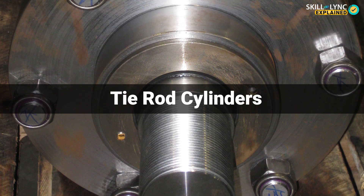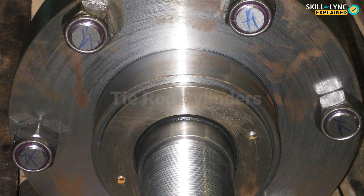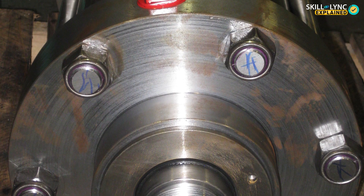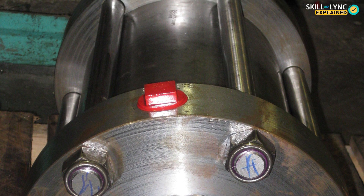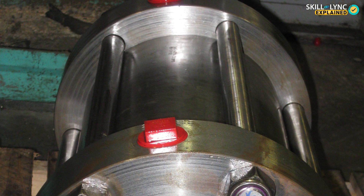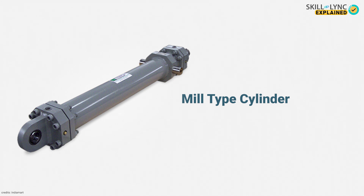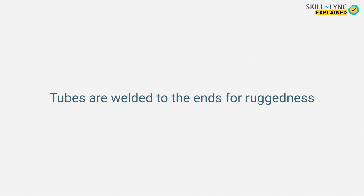A cylinder employs pressurized hydraulic fluid, which requires the cylinder to be strong enough to withstand the forces. Apart from classification by functioning, hydraulic cylinders can also be classified according to their construction. The most common type is called the tie rod cylinder. These cylinders have four or more tie rods held together tightly by screws, and are used for applications in medium and heavy duty conditions where shock loads are experienced. If the length-to-diameter ratio of the bolts in a tie rod cylinder exceeds 2:1, such cylinders are called mill type cylinders.